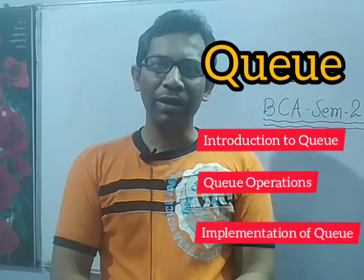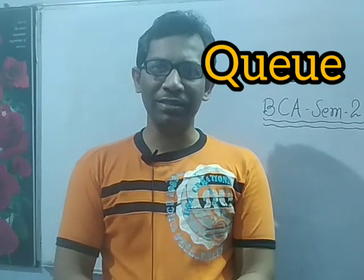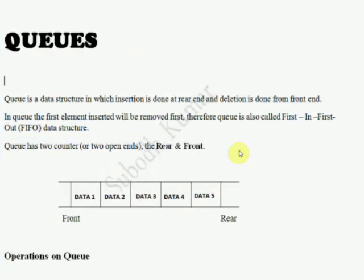The array implementation of Queue is explained in this lesson. A Queue is a data structure in which insertion is done at the rear end and deletion is done from the front end. In a Queue, the first inserted element will be removed first; therefore, Queue is also called a First In First Out — that is, FIFO — data structure.